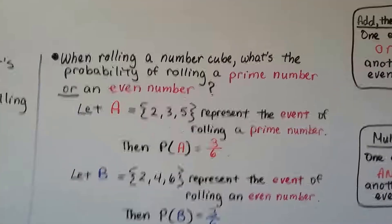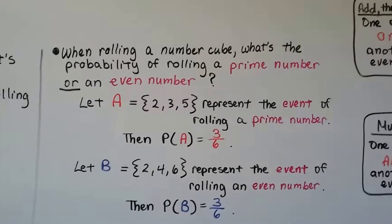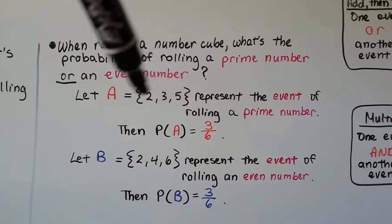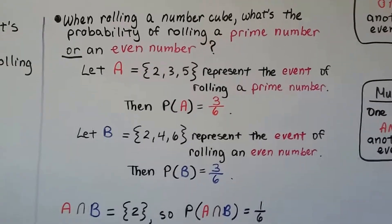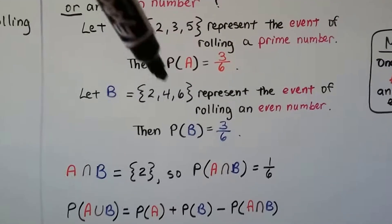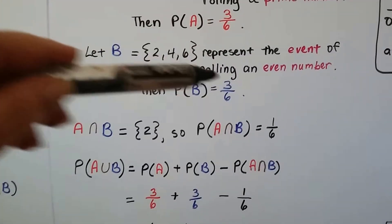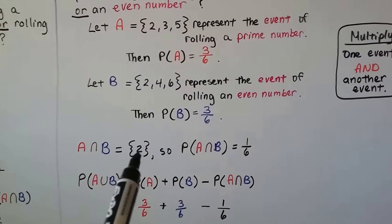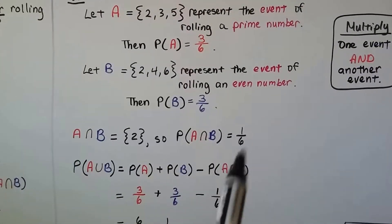Let's try another one. When rolling a number cube, what's the probability of rolling a prime number or an even number? Remember, 1 is not prime. We let A equal {2, 3, 5} for prime numbers — that's 3 numbers out of 6, so probability of A is 3/6. We let B equal {2, 4, 6} for even numbers — also 3 numbers out of 6, so probability of B is 3/6. The A intersect B is just {2}, one number out of 6, so the probability of A intersect B is 1/6.